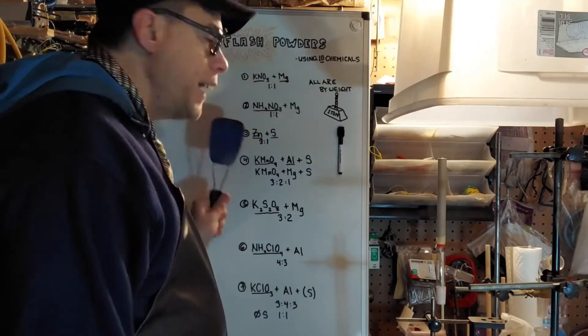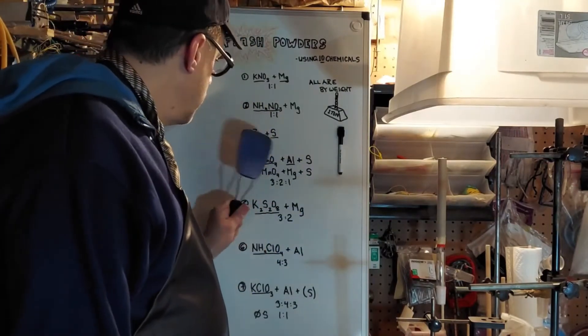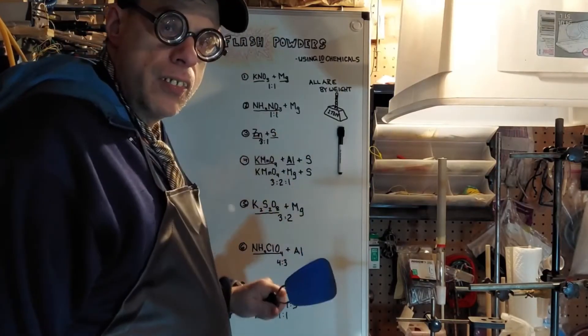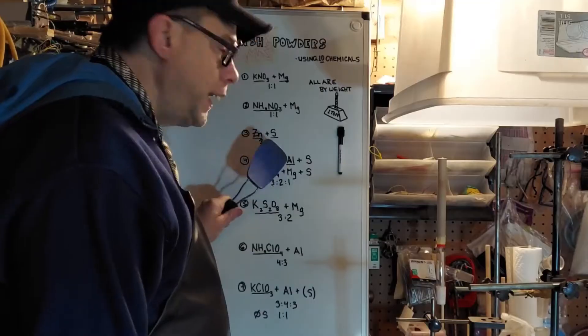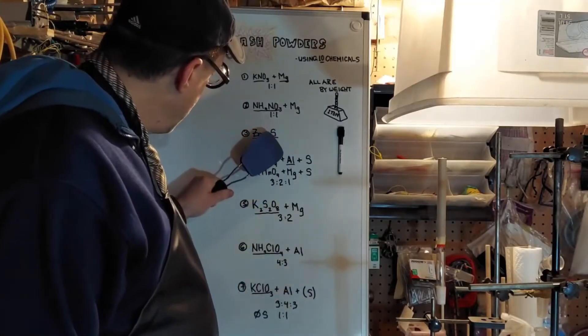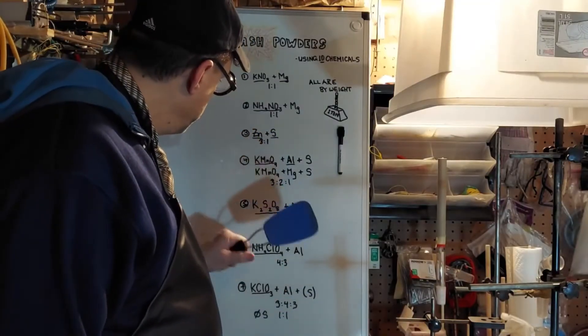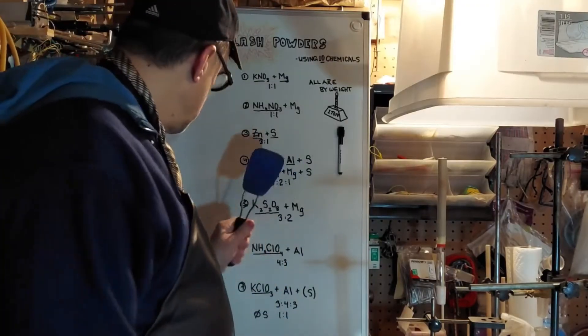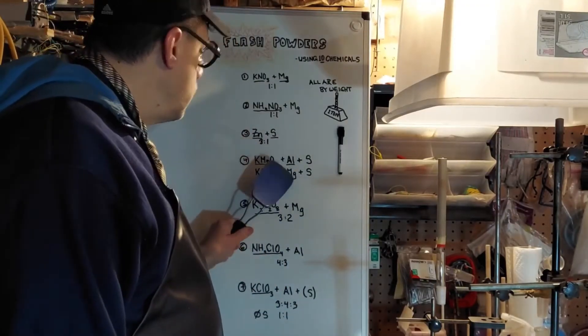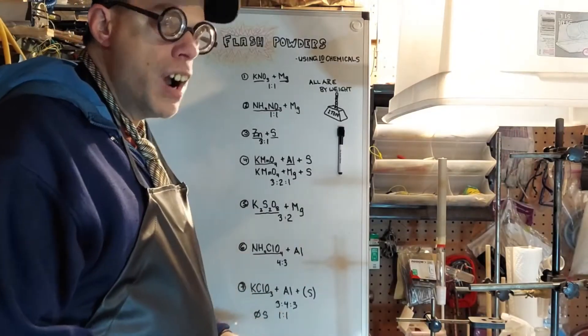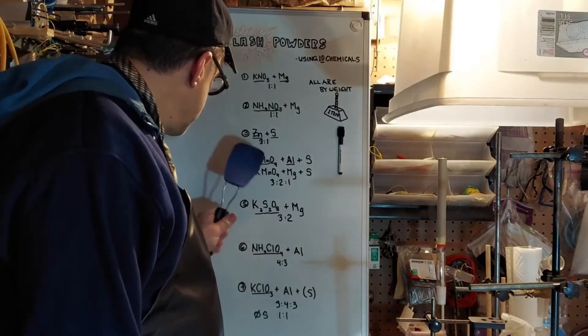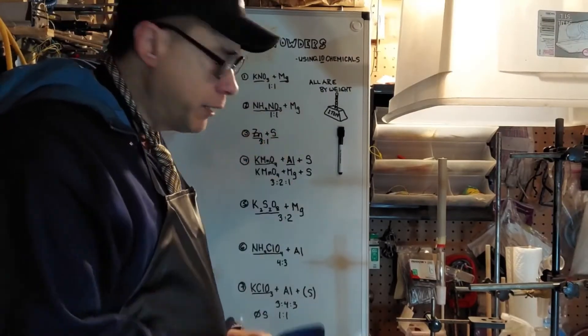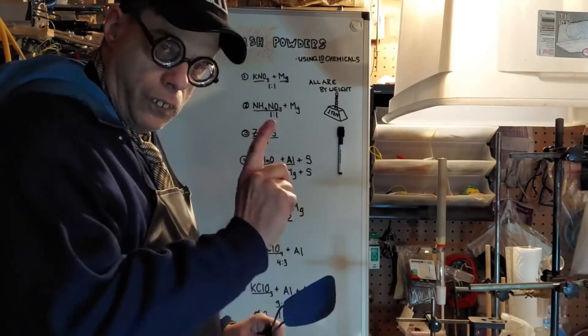Next one, potassium permanganate, aluminum, and sulfur. Now you can switch out that aluminum and you can use magnesium. So one, aluminum, two, magnesium. I think the magnesium is a little bit nicer and brighter for sure. And those go three, two, one like your countdown. Five, four, three, two, one. Well, potassium permanganate three parts, aluminum or magnesium two parts, and sulfur just one part.